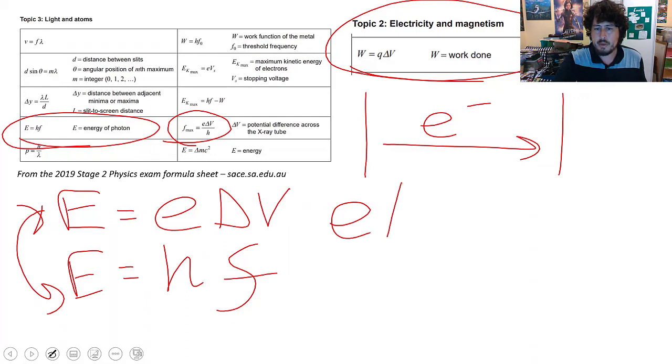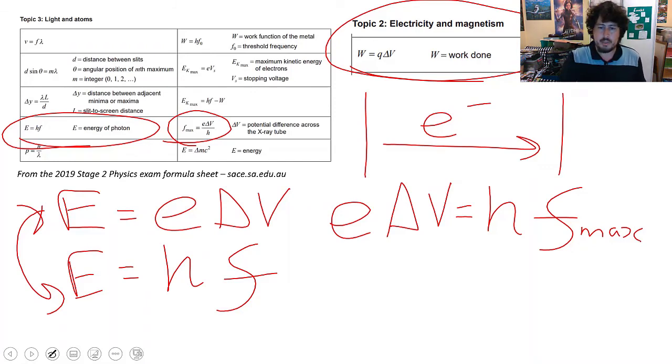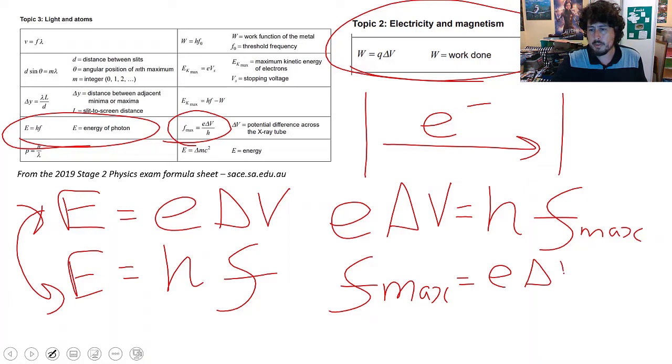The charge of an electron times the change in voltage will equal Planck's constant times the frequency, and that's going to be the F_max of the x-ray. So then we can simply rearrange this formula so that F_max will equal the charge of an electron times the change in voltage divided by Planck's constant.